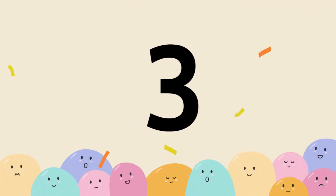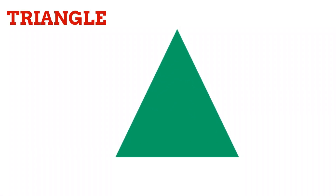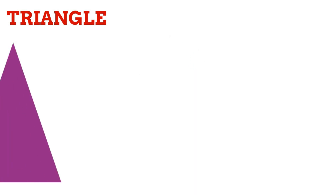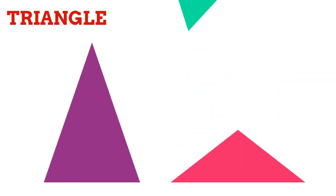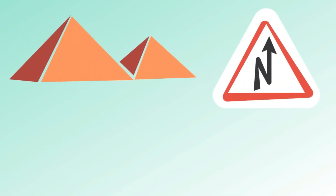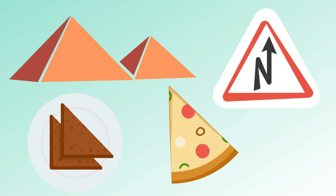We'll see the third shape. The next shape is triangle. Triangle has 3 sides: 1, 2, 3 — that's 3 corners. Triangle comes in different sizes, but these are all triangle. Triangle examples: pyramid, signboard, yummy sandwich, favorite pizza — this is all triangle.